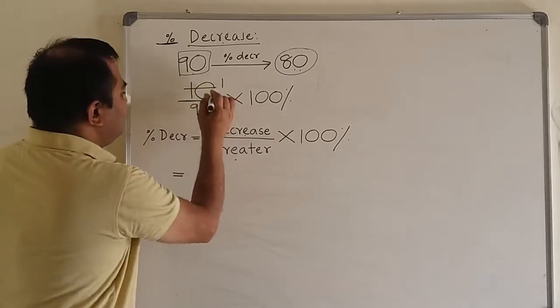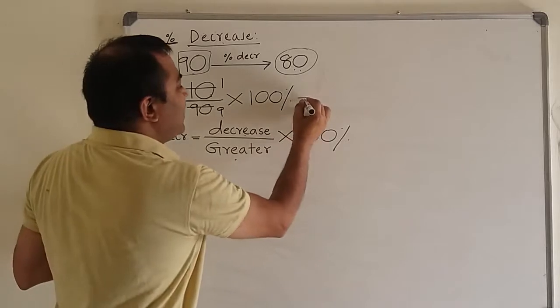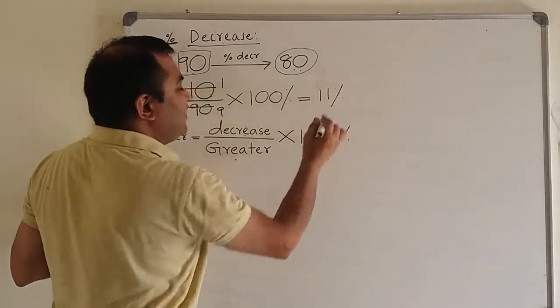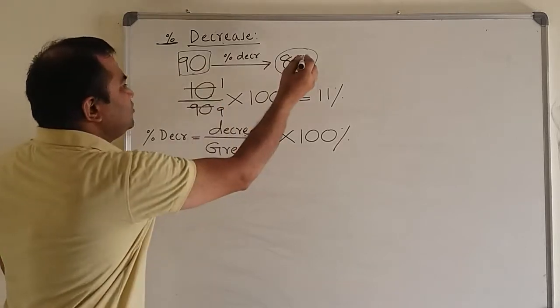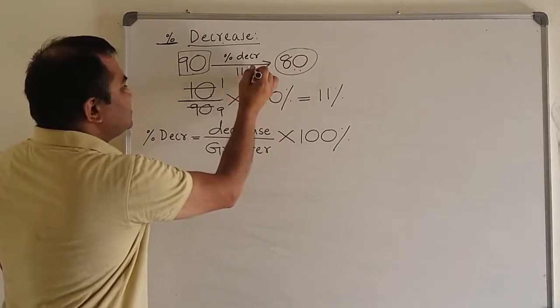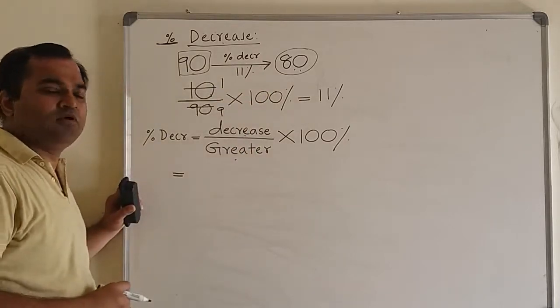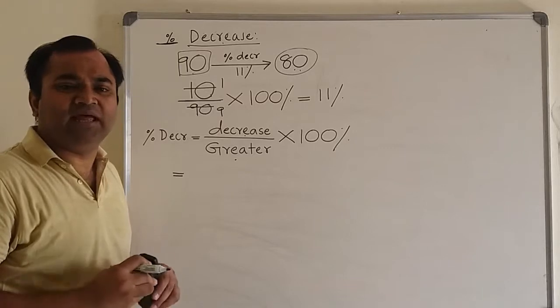Let us do the calculation here. 10 divides 90 nine times, and 100 by 9 is roughly 11. So we can say from 90 to 80, the percentage decrease is approximately 11. So this is the formula for finding percent decrease in any quantity.